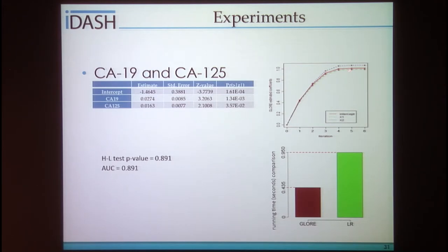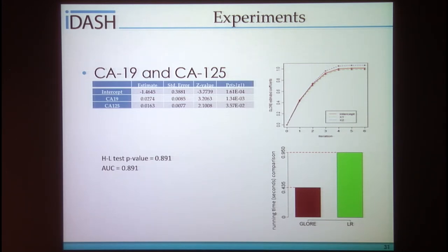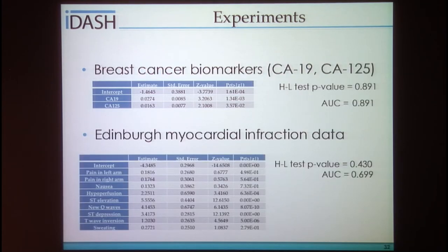The model converges very quickly in seven iterations, across all three parameters — intercept, X1, and X2. As a side effect, Glow is more efficient than the centralized logistic regression version because computation is shared by the two participating parties. I also tried this on the Edinburgh myocardial infarction dataset with more samples — 1,281 samples — and got exactly the same table, showing no difference in the Hosmer-Lemeshow test and AUC.